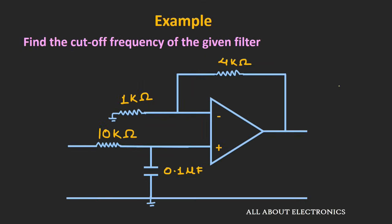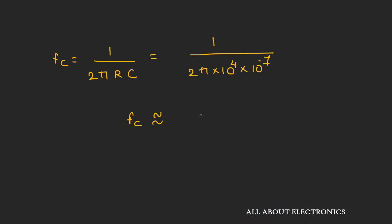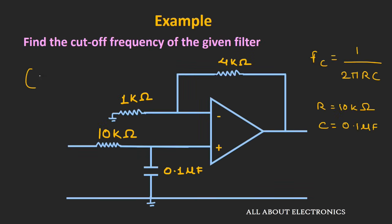Let's take one example based on this active low-pass filter. In this example, we have been given to find the cut-off frequency for the given filter. This filter is used in a non-inverting configuration, and we know the cut-off frequency expression will be 1 divided by 2π times RC. Here the value of R is 10 kΩ and the value of capacitance is 0.1 µF. Putting in all the values, the cut-off frequency will be approximately equal to 159 Hz. The gain of this filter will be 1 plus Rf by R1, which equals 5. So if you apply a signal of 1V at 1 Hz frequency, at the output you will get 5V at 1 Hz.